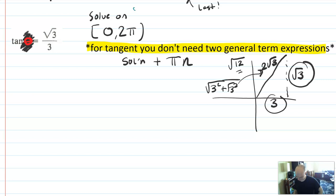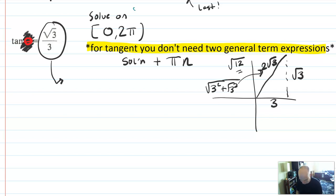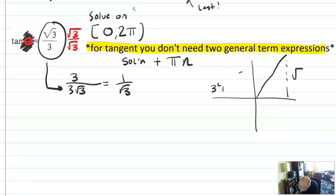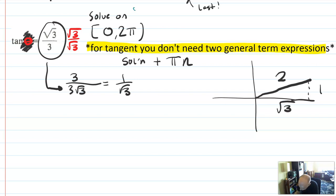So we have the pattern 1, root 3, 2. This is feeling like a π over 6. Here's another trick: root 3 over 3 is rationalized. Just un-rationalize it: rationalize the numerator to get 3 over 3 root 3, which is 1 over root 3. So this triangle had opposite 1 and adjacent root 3, hypotenuse 2, meaning theta is π over 6.